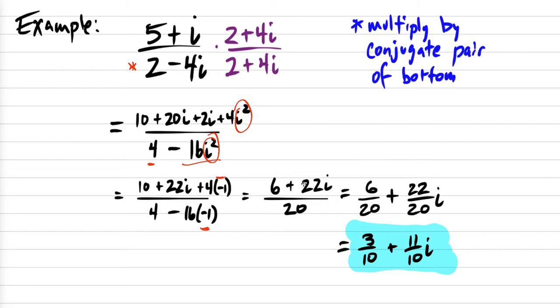So the top turned out to be six plus 22 i. The bottom turned out to be 20. To make it a single normal answer, we're going to separate the fraction with the first thing, whatever this symbol is, and then the second thing. And then you reduce it if you can. And your answer is 3 over 10 plus 11 over 10 i? Yes.